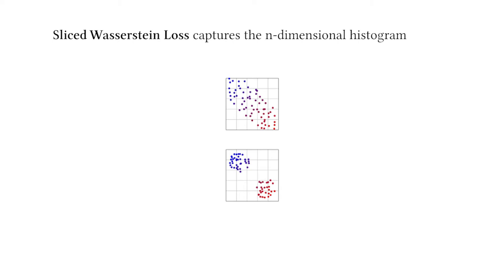Luckily, the well-documented sliced Wasserstein distance provides a simple approximation. Instead of operating in n-d, we stochastically draw 1-d slices in the n-d feature space.